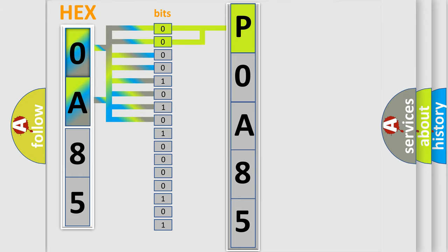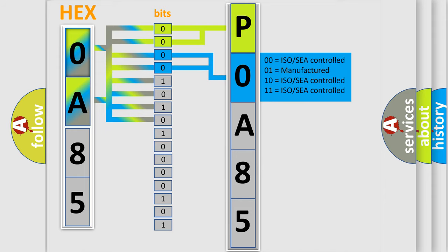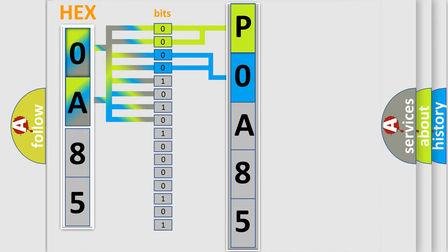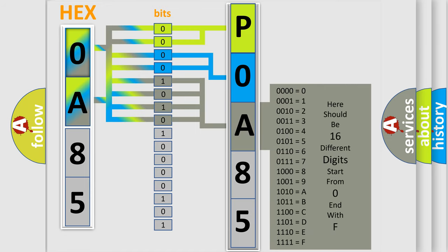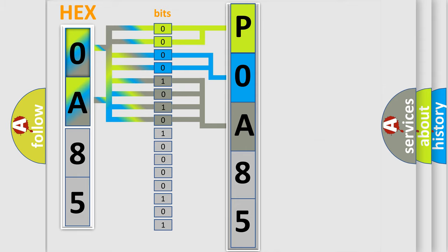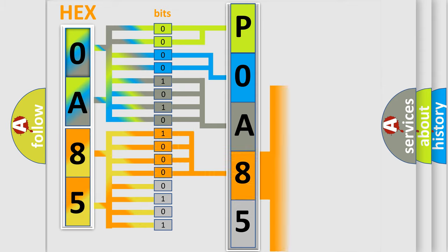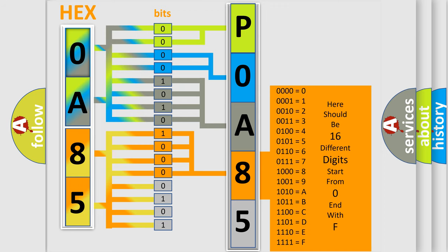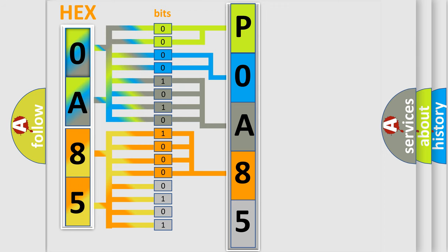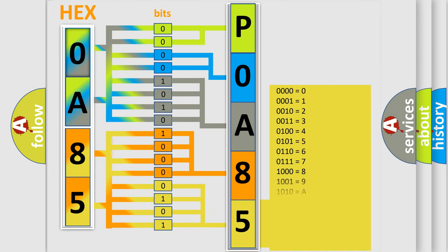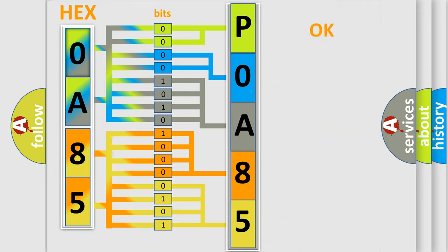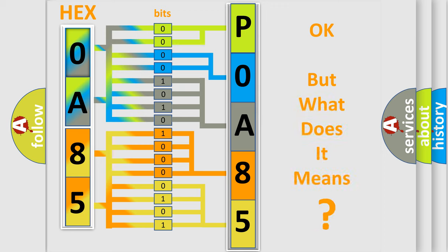The next two bits determine the second character. The last bits of the first byte define the third character of the code. The second byte is composed of a combination of eight bits. The first four bits determine the fourth character, and the combination of the last four bits defines the fifth character. A single byte conceals 256 possible combinations. We now know how the diagnostic tool translates the received information into a more comprehensible format, though the number itself does not make sense without understanding what it actually expresses.